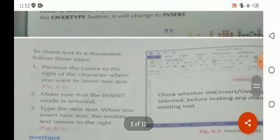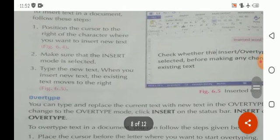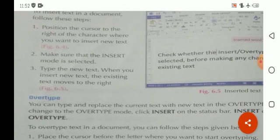When we insert a text in a document, we follow these steps. Position the cursor to the right of the character where you want to insert new text. Second step, make sure that the insert mode is selected. And then, type the new text. When you insert new text, the existing text moves to the right.